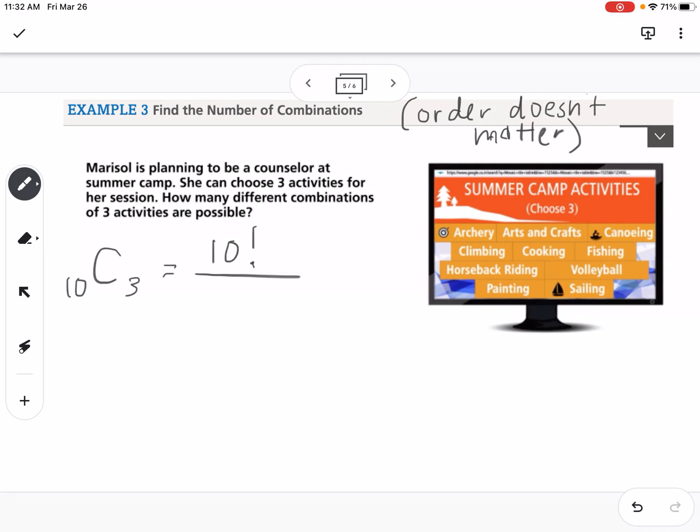The combination formula: we would take 10 factorial on the top. The denominator is the part that's different. We would take our r factorial, which is 3, times 10 minus 3 factorial. Or this would be 10 factorial over 3 factorial times 7 factorial. If we type that in the calculator, we get 120 possible combinations.